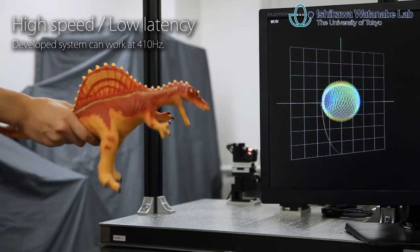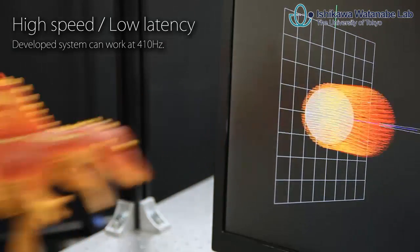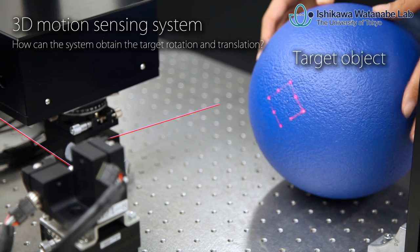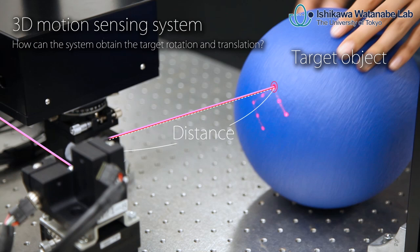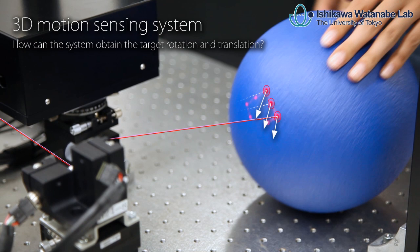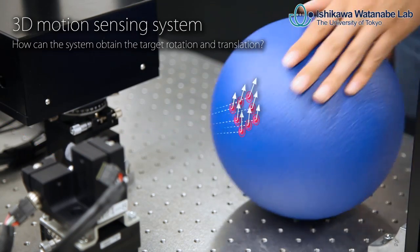This system irradiates the lasers to a target and measures the distance and velocity at high speed. By integrating a few measurements, the target rotation and translation can be calculated.